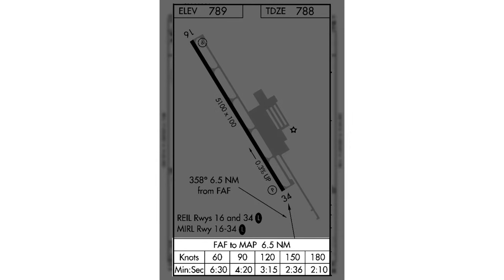Sometimes, if applicable, you'll see a time and distance table for the approach. This gives you the distance and time required to go from the final approach fix to the missed approach point at selected ground speeds. For example, going from the Westminster VOR at 90 knots, the chart shows it takes four minutes and 20 seconds. On certain approaches — this being one example — you're not able to identify the missed approach point visually. So you start the timer: if you've been on the final approach segment for that amount of time and don't see the runway, it's time to go missed.